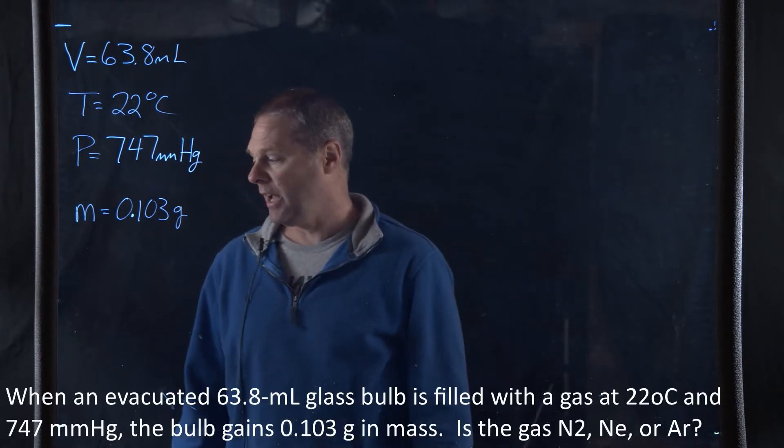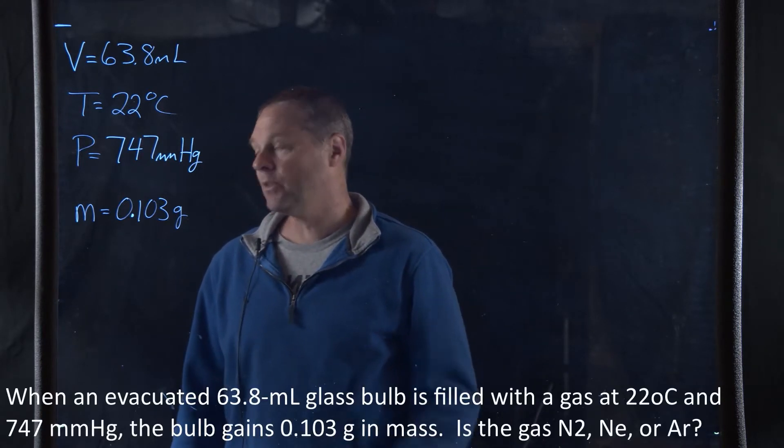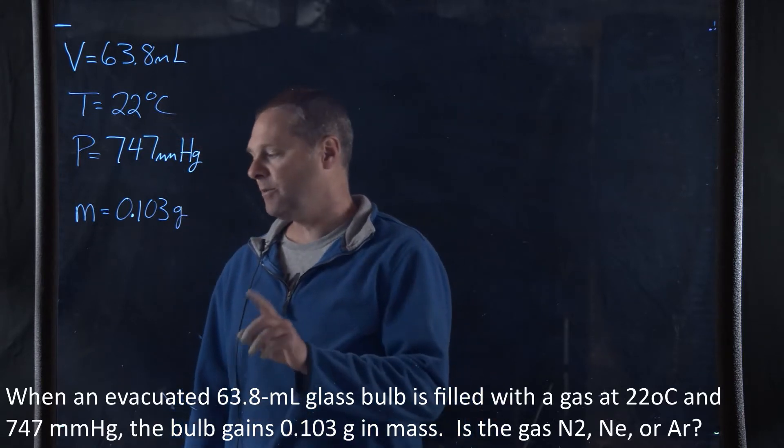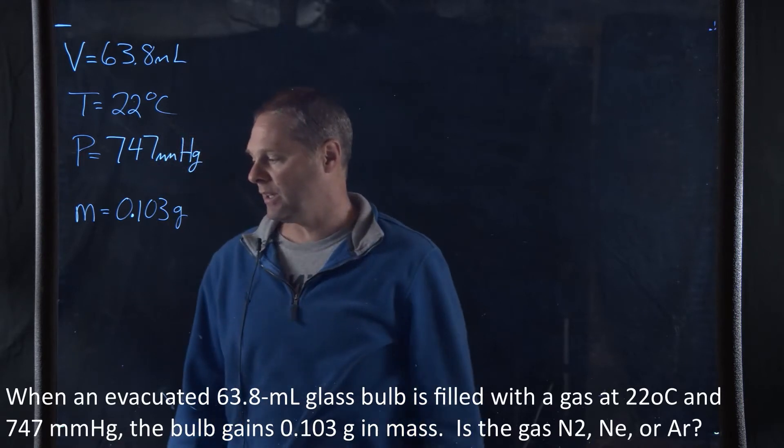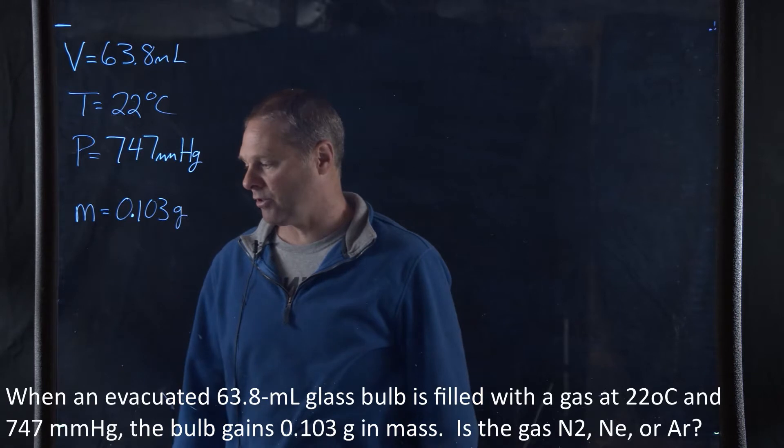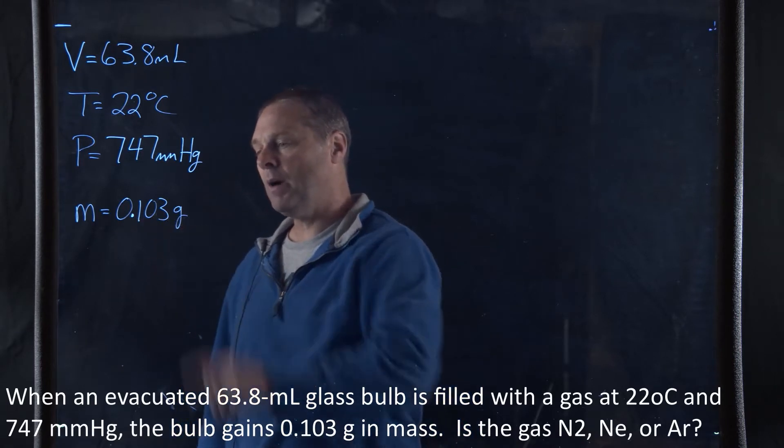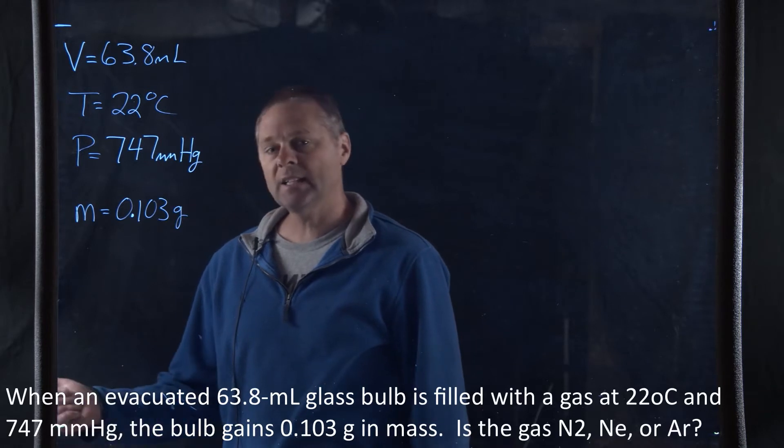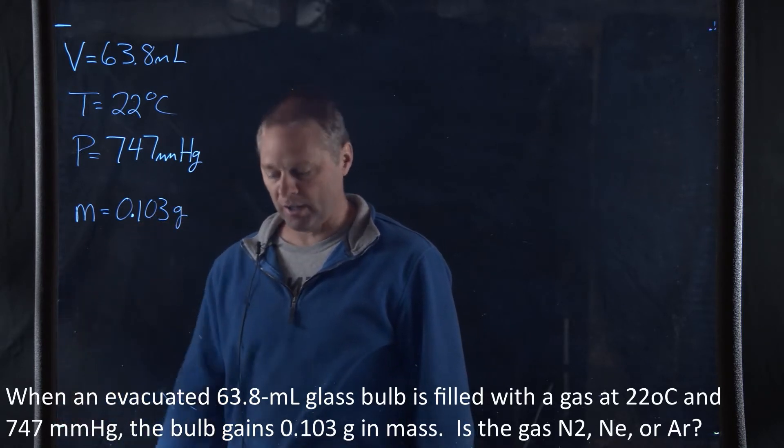So the problem reads: an evacuated 63.8 milliliter glass bulb is filled with a gas at 22 degrees Celsius, 747 millimeters of mercury of pressure, and the bulb gains 0.103 grams in mass. Is the gas nitrogen, neon, or argon?